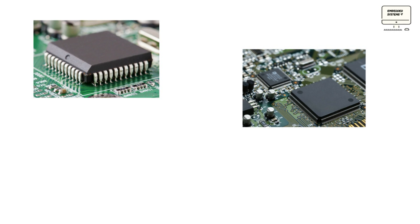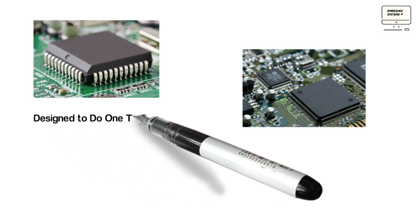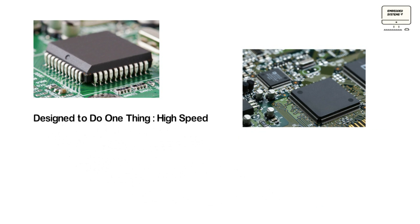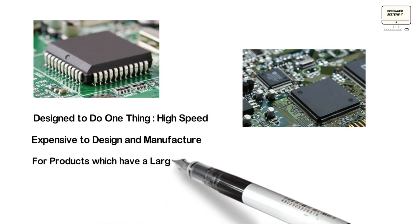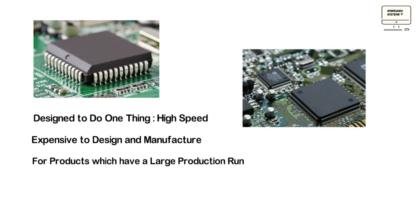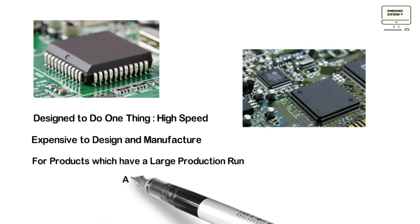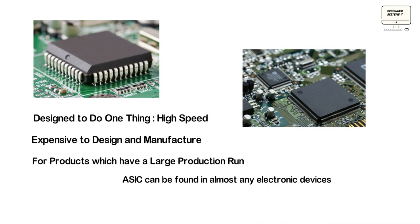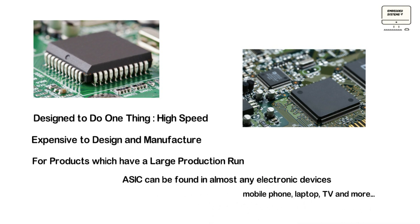Compared to programmable logic devices or standard logic integrated circuits, an ASIC can improve speed because it's specially designed to do one thing and it does that thing well. Another main advantage of ASIC is to reduce chip size, as a large number of functional units of a circuit are constructed over a single chip.